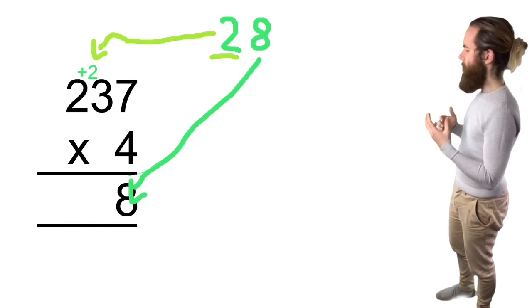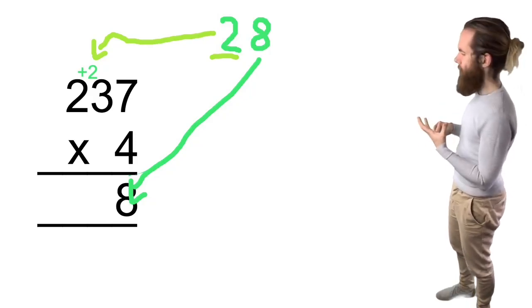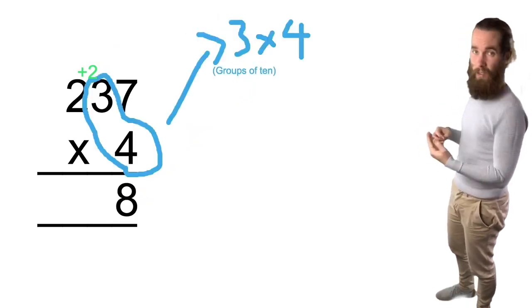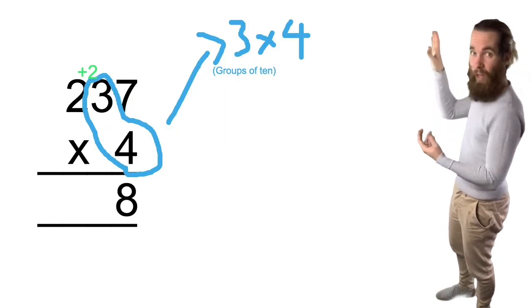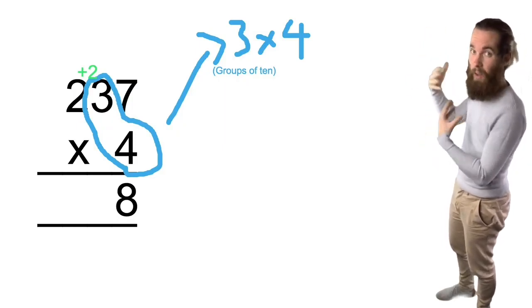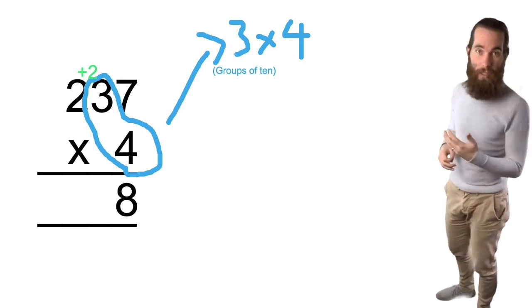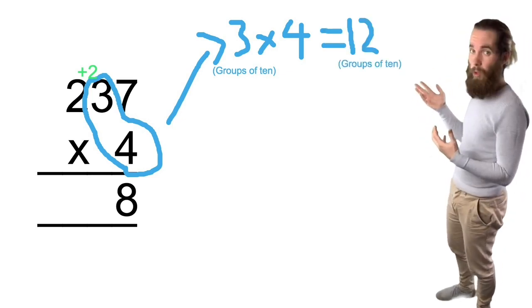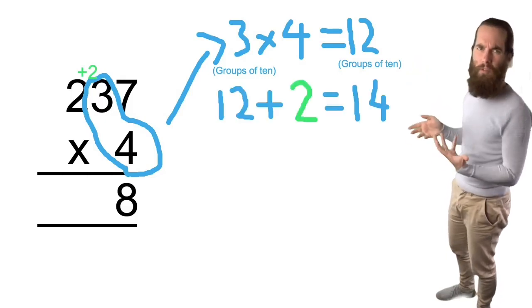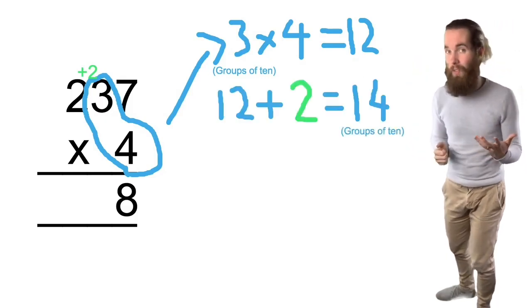Now I'm going to look at my tens column. So I've got three tens. I'll add, remember I'll add those two later. We don't worry about them until after we've done the multiplication. So we've got three times four which is 12, plus two, plus the two tens is 14, which is actually 14 groups of 10.